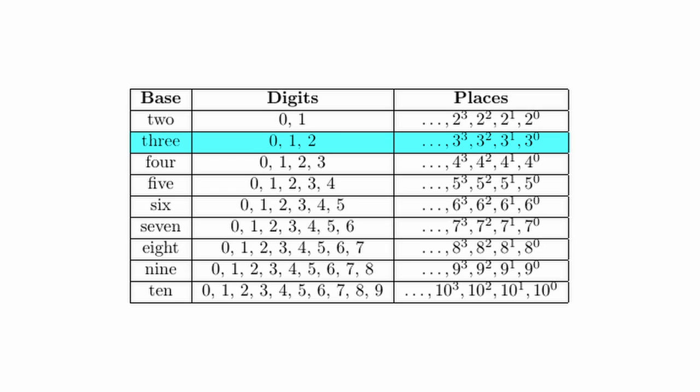In base three, we have zero, one, two, it's called ternary sometimes, where we have everything in terms of powers of three that are represented in each of those places.